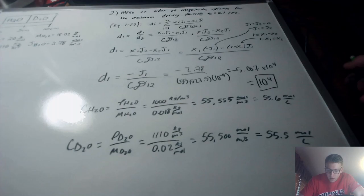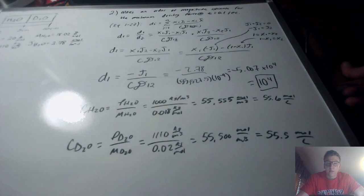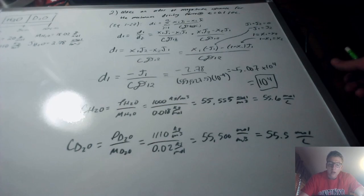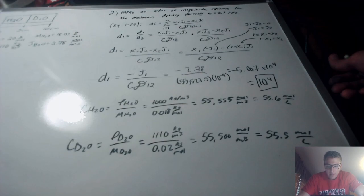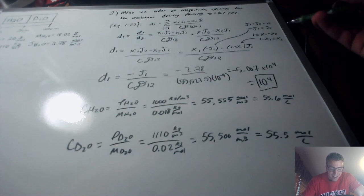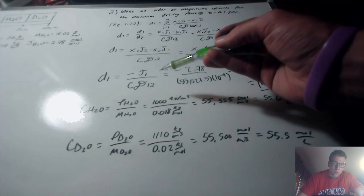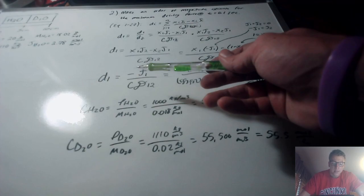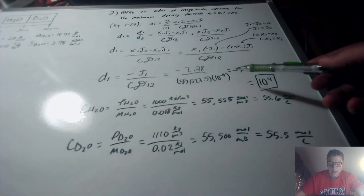Simplifying the numerator gives us negative j1, so the driving force of component one equals negative molar diffusion flux of component one, divided by the molar concentration c times the Stefan-Maxwell coefficient. This is our final simplified form. We now need the concentration value c.